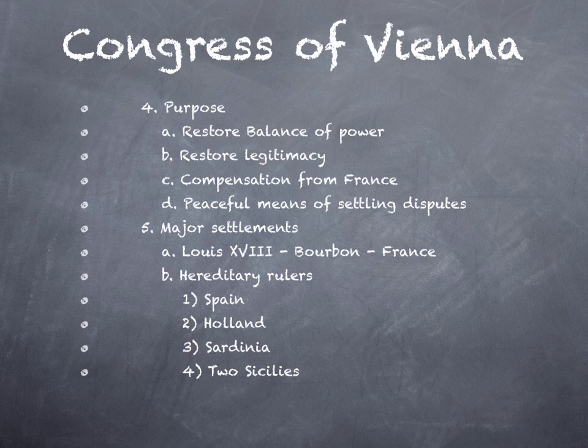One of the purposes of the Congress of Vienna was to set up a system to avoid future massive conflicts, and you can see the fruits of that desire long after Vienna. After World War I came the League of Nations; after World War II came the United Nations. All of those follow a similar trend of Europe wanting to avoid the massive conflicts it kept getting itself into.